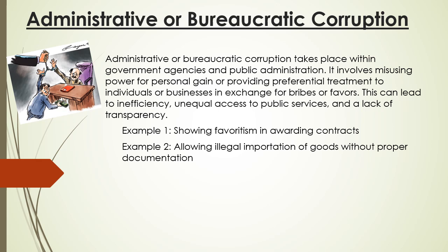The fourth form is administrative or bureaucratic corruption. This takes place within government agencies and public administration. It involves misusing power for personal gain or providing preferential treatment to individuals or businesses in exchange for bribes or favors. This can lead to inefficiency, unequal access to public services, and a lack of transparency. First example: showing favoritism in awarding contracts. Second example: allowing illegal importation of goods without proper documentation.